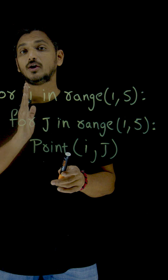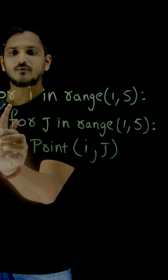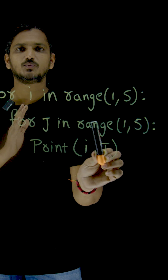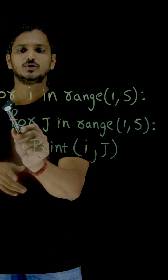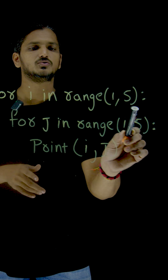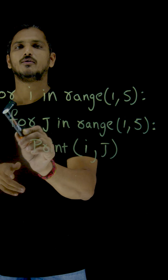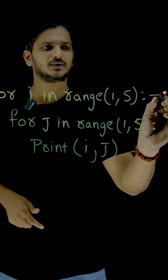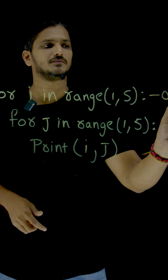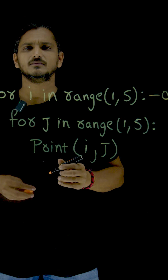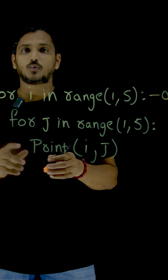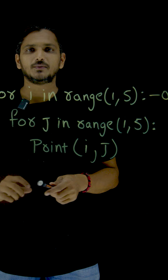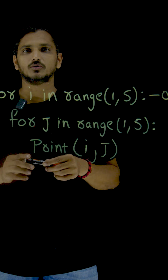What is the body of this loop? Whatever you write inside, this is what we call it as the body of the loop. These two statements belong to the body of the loop. For understanding purposes, this is the outer loop, and these two statements belong to the body of the outer loop.